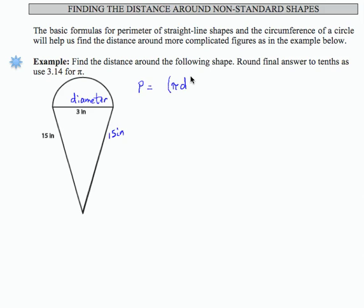But because I only want half of the circumference, I'm going to do half of that plus twice 15. So if I can fill in the pieces there and then round, I'll be okay.